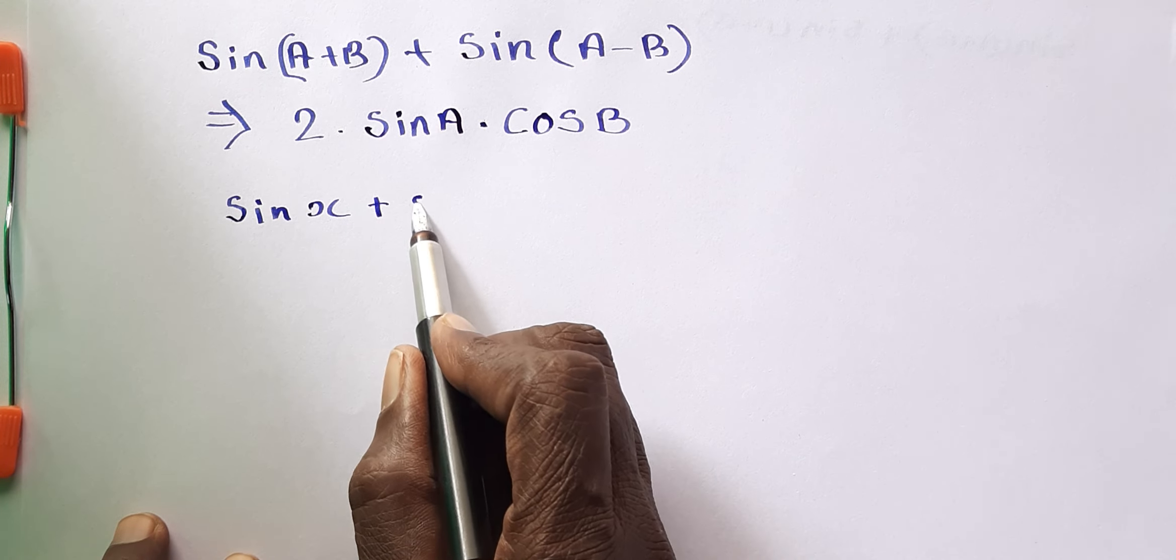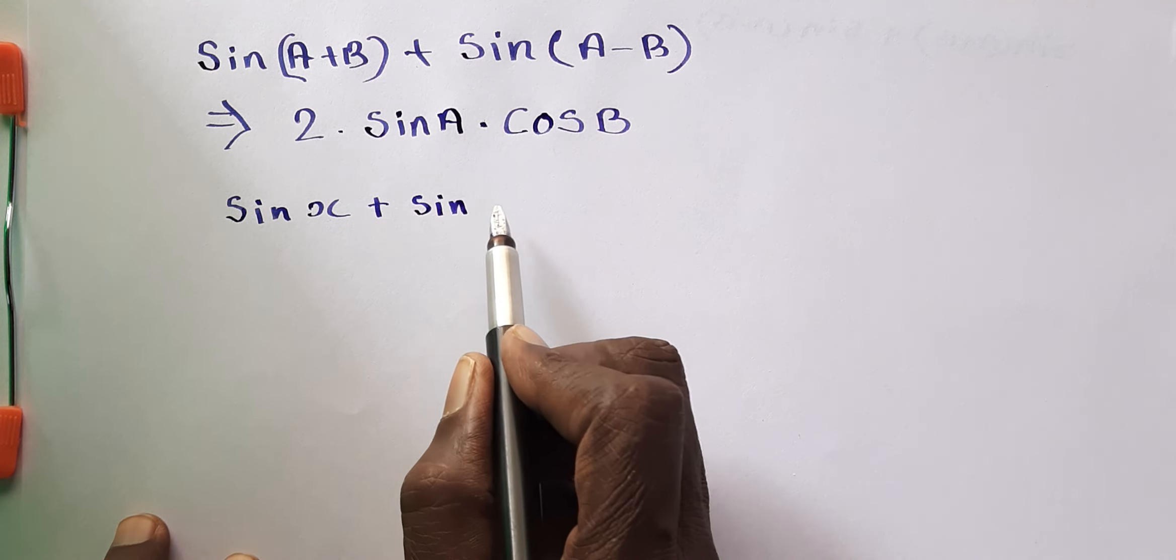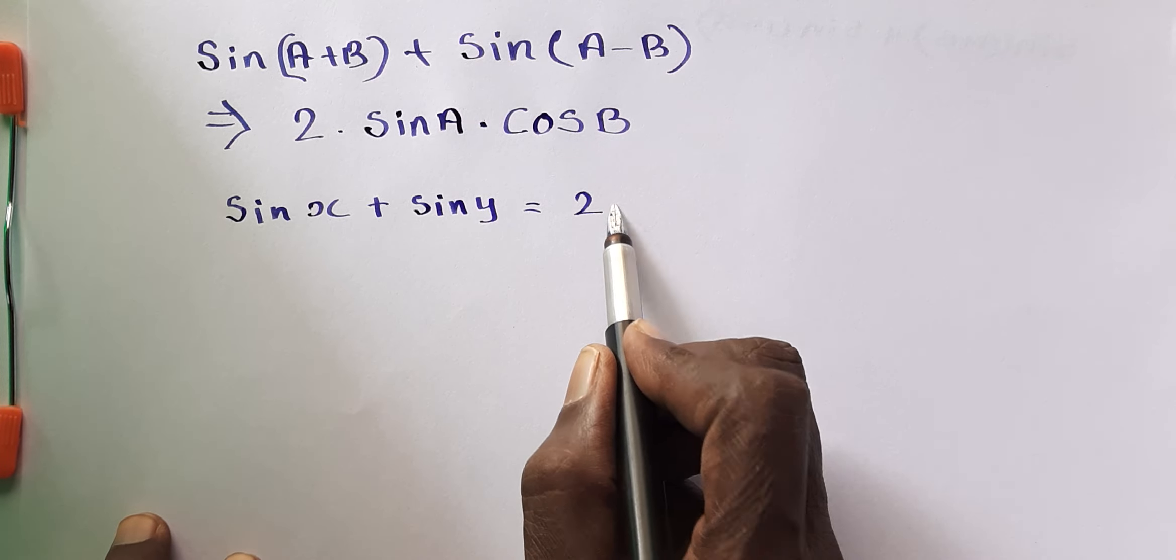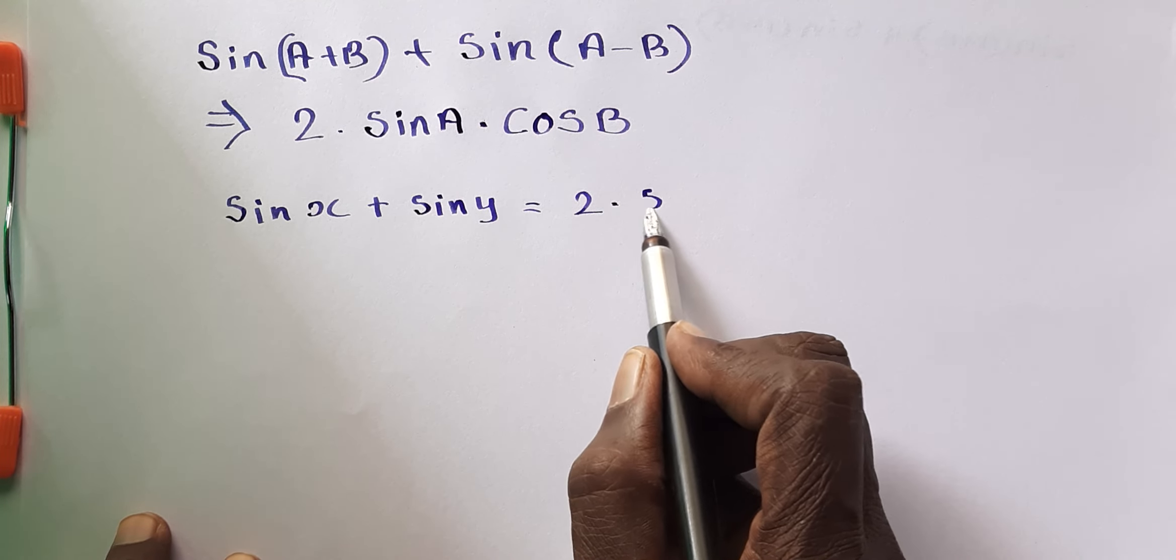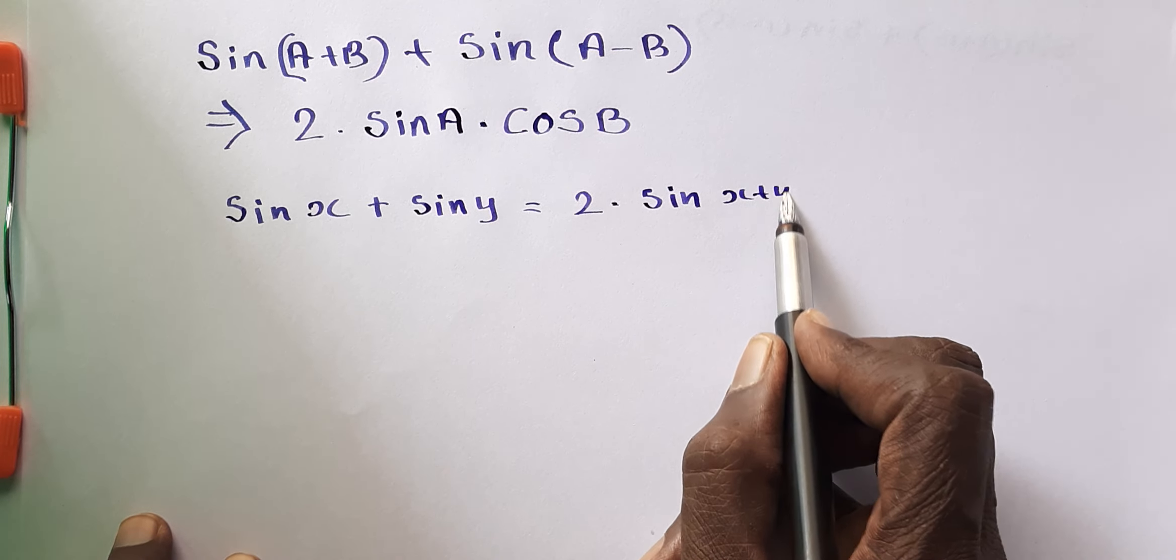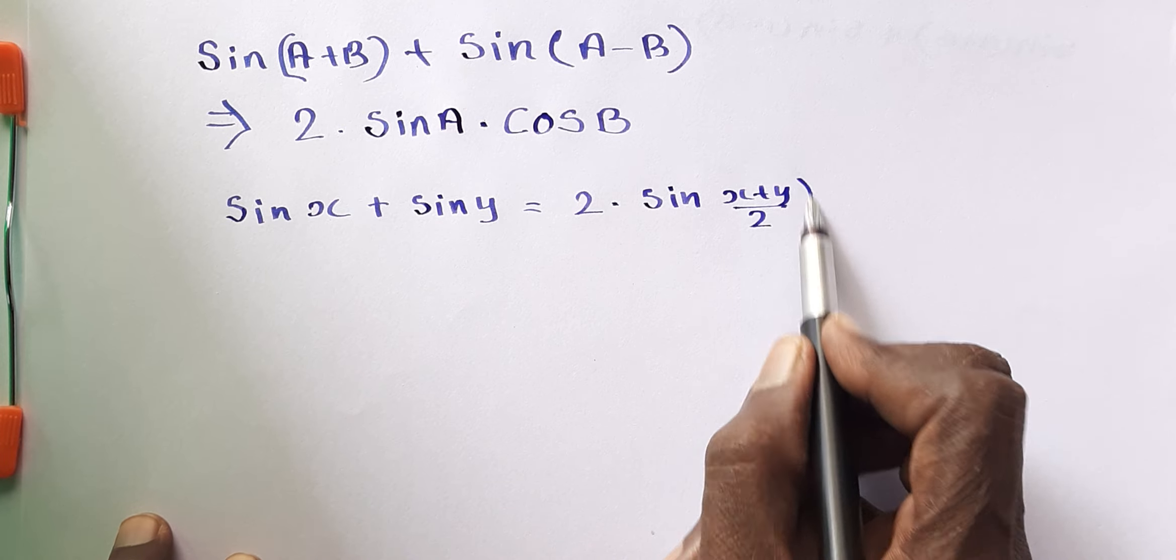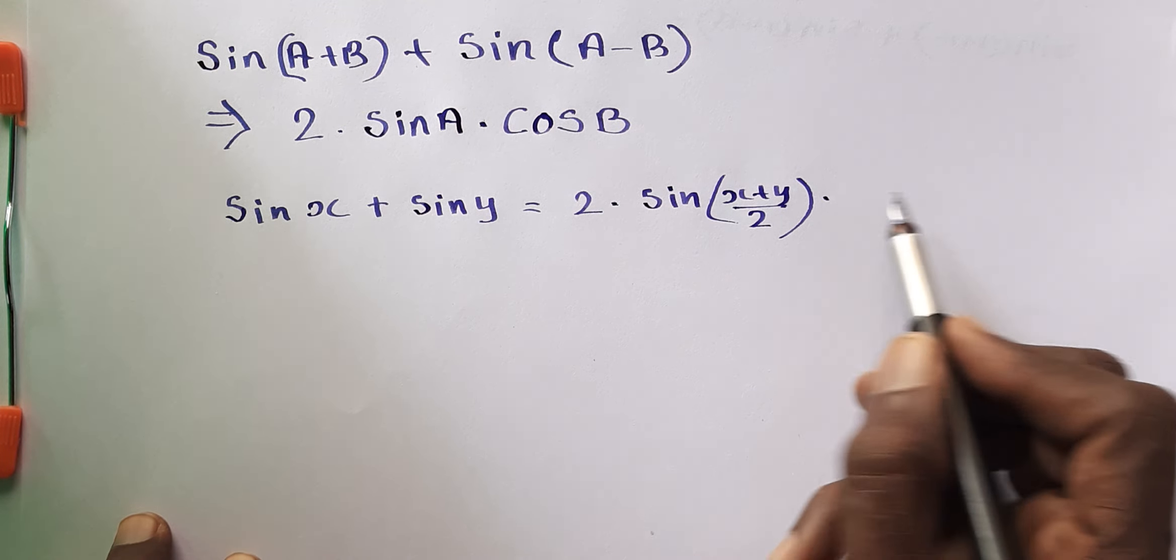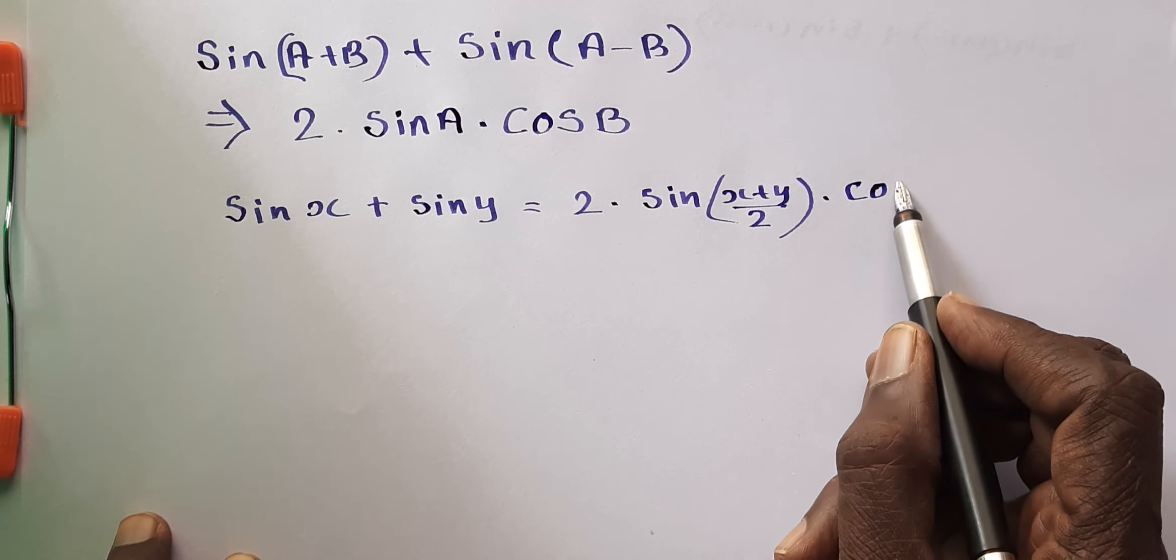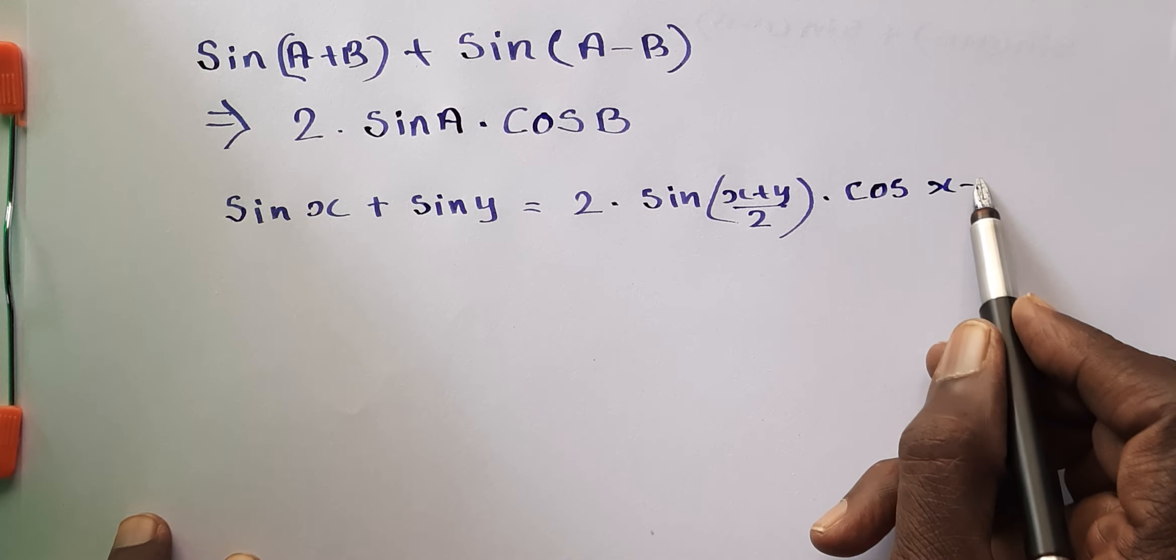plus Sine Y is equal to 2 into Sine X plus Y by 2 into Cos X minus Y by 2